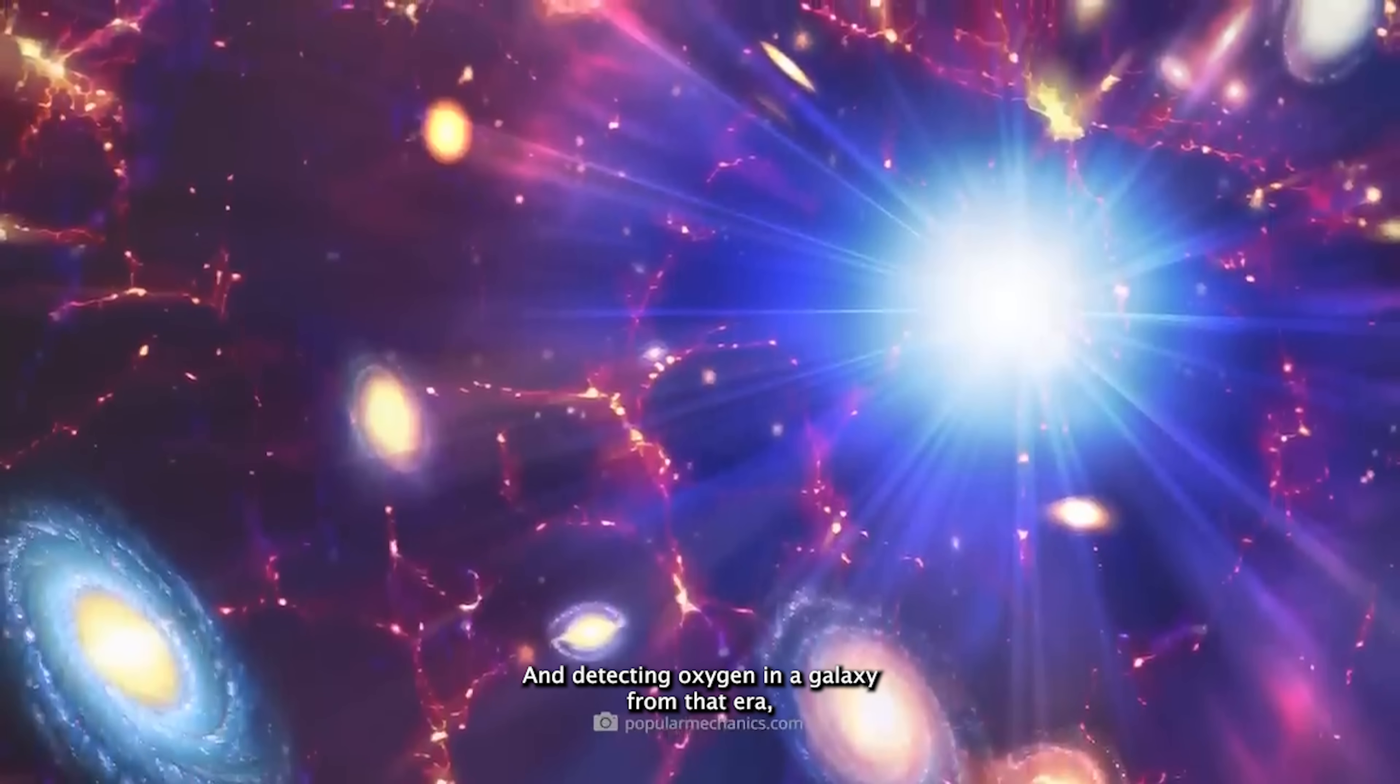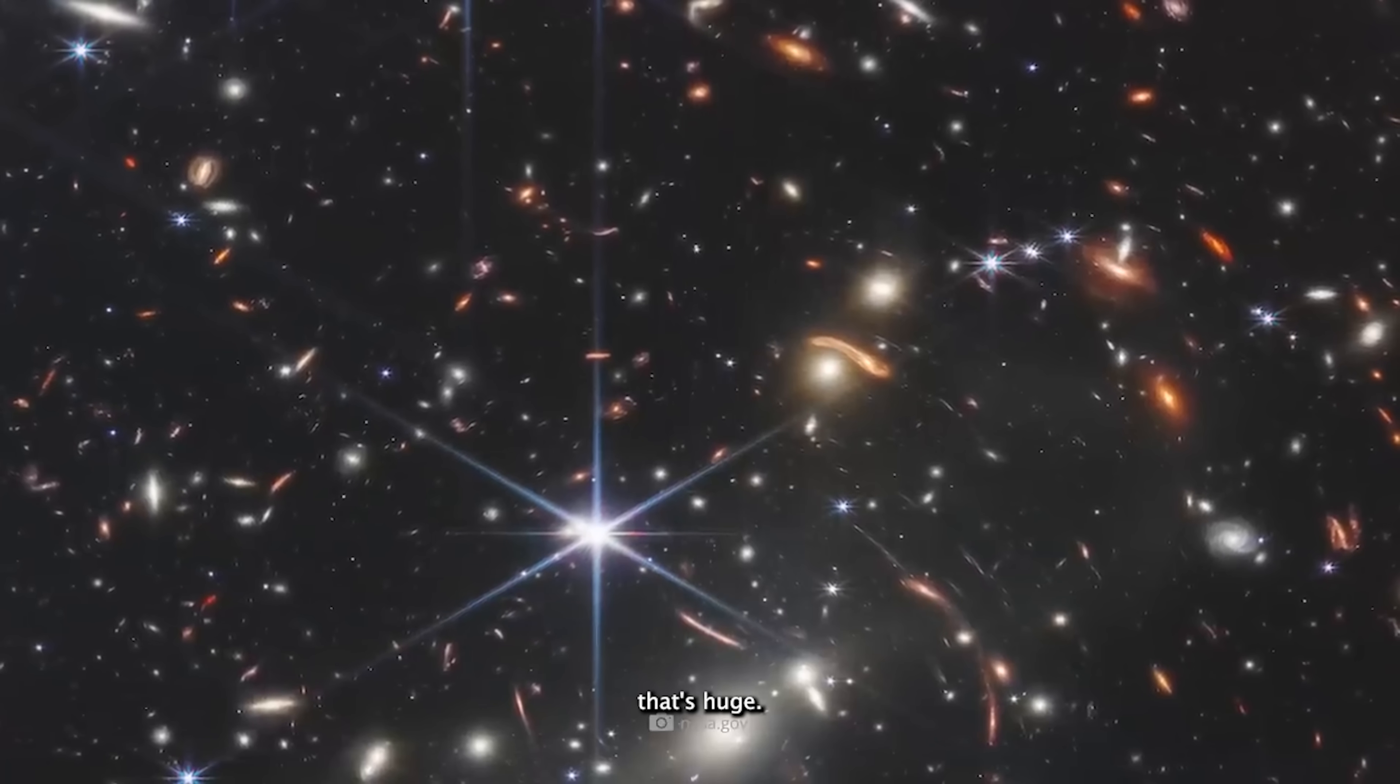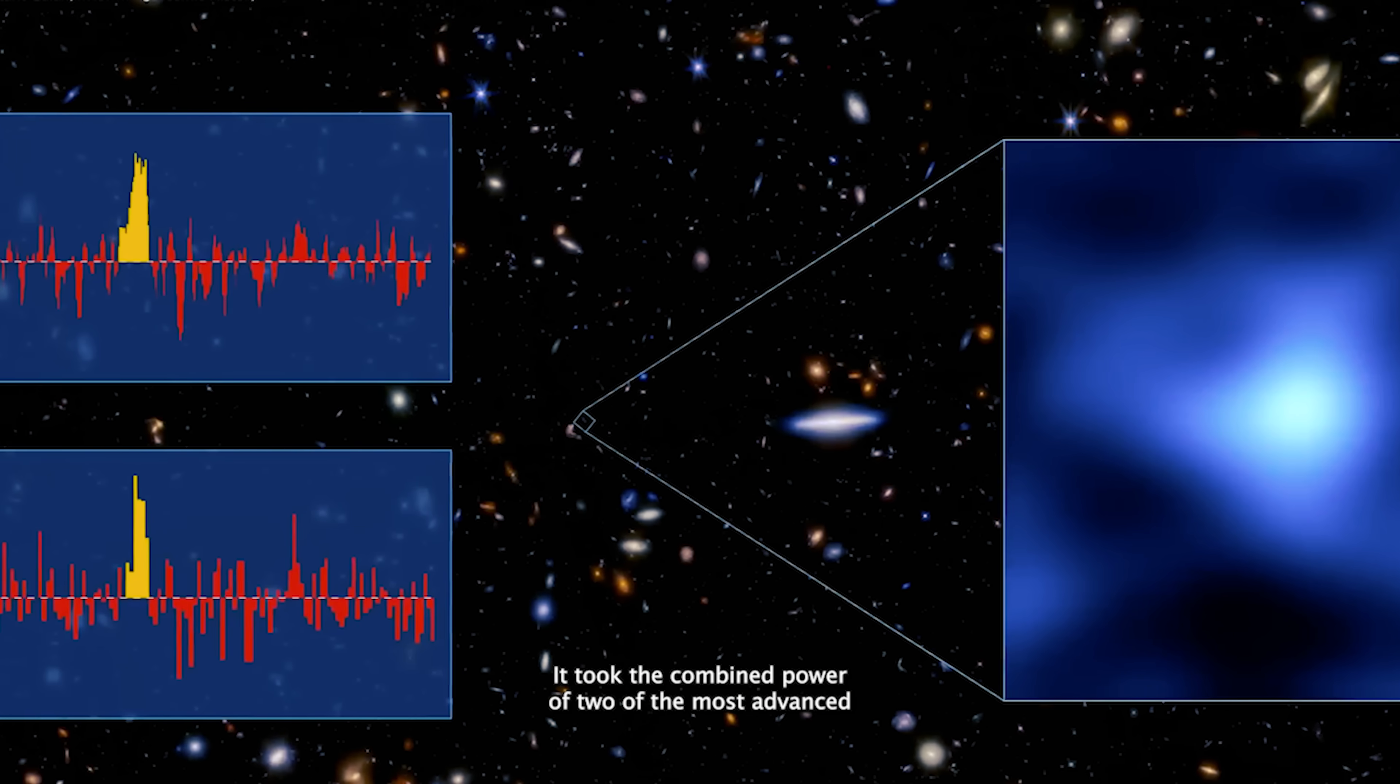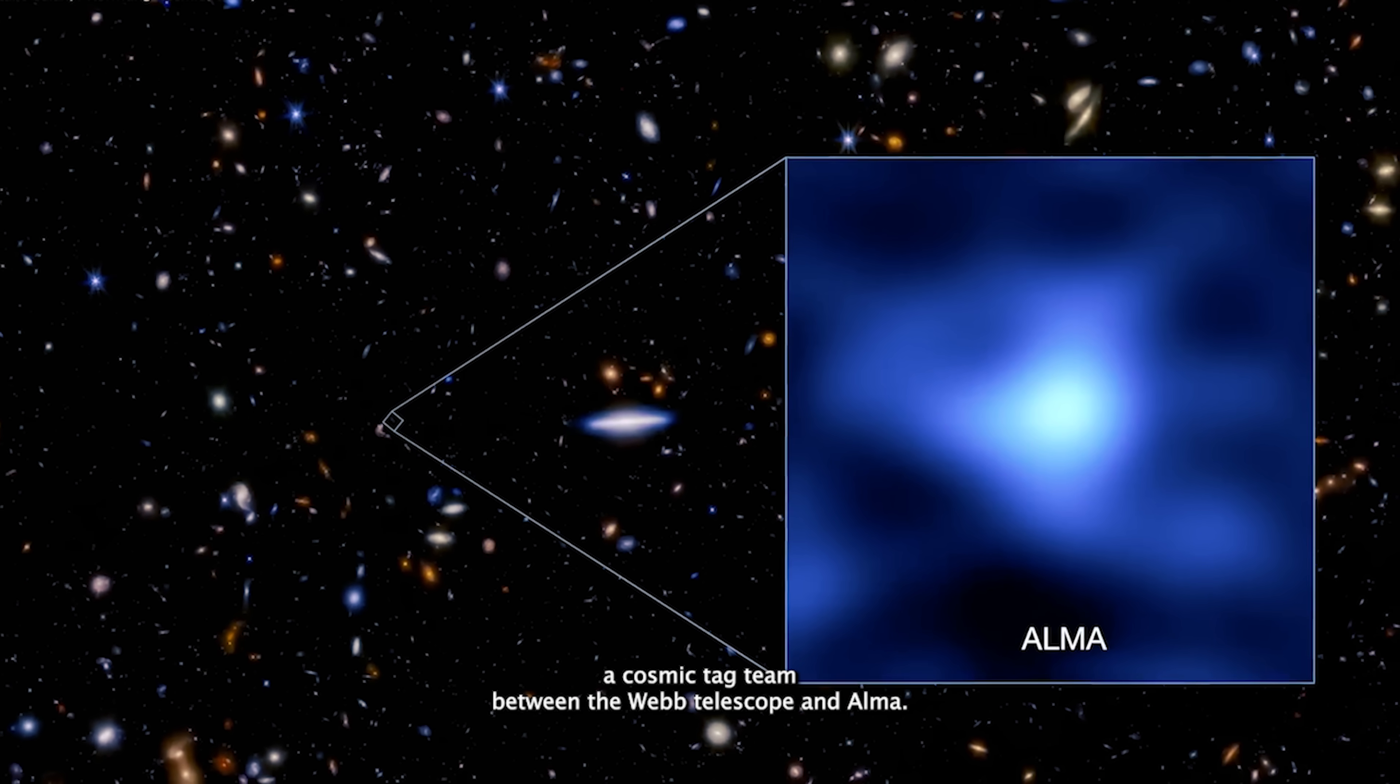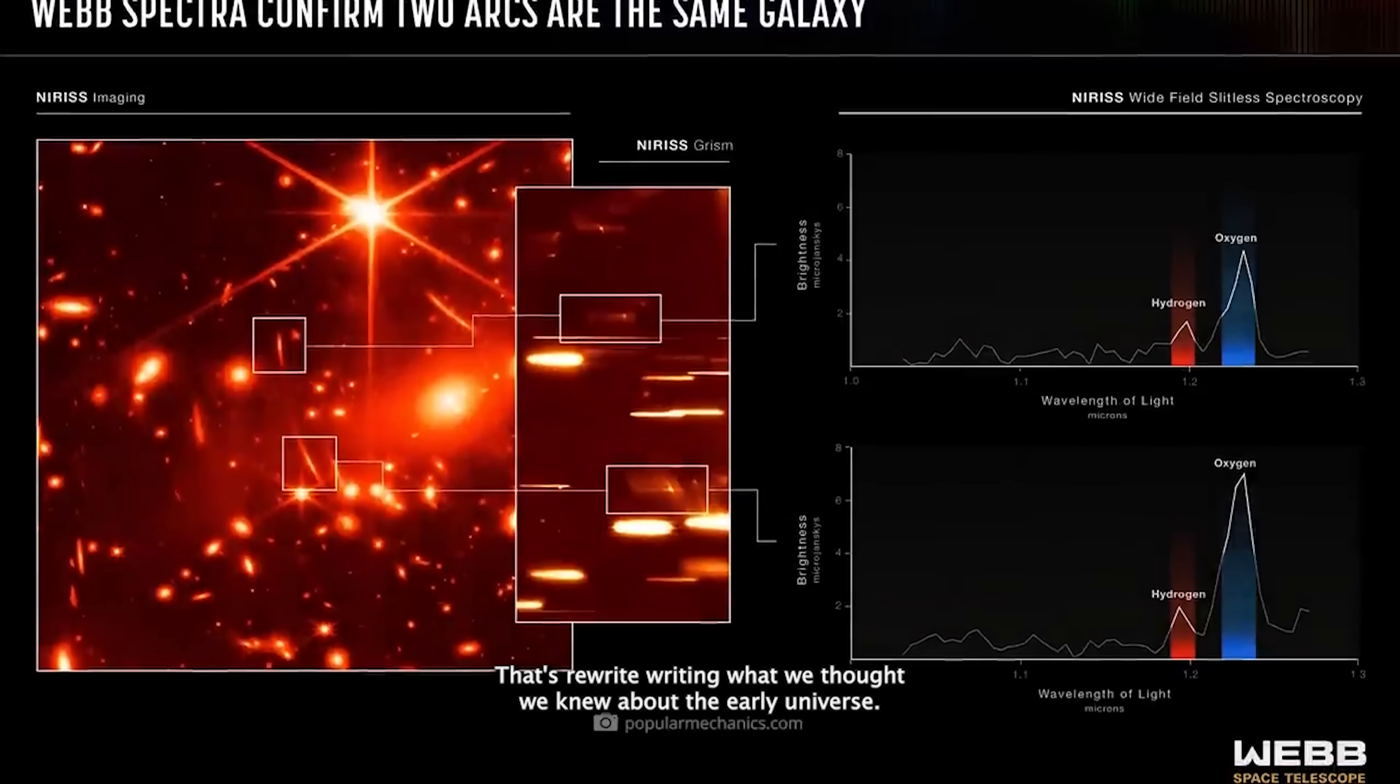And detecting oxygen in a galaxy from that era, that's huge. It took the combined power of two of the most advanced astronomical instruments on Earth and in space to pull it off. A cosmic tag team between the Webb telescope and ALMA that's rewriting what we thought we knew about the early universe.